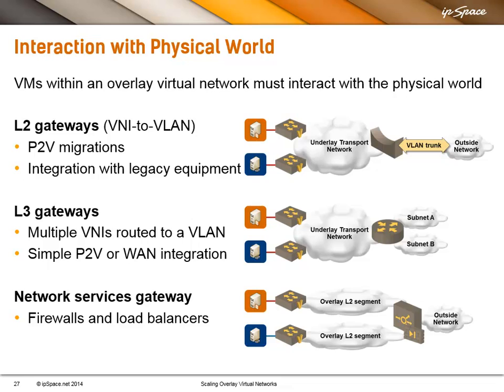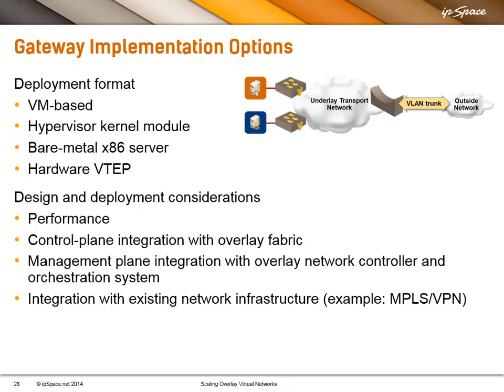Quite often you also have to implement some sort of network services with firewalls, load balancers, or similar. There are numerous implementation options when considering gateways. You can use a VM-based gateway, a gateway implemented alongside other hypervisor activities in the hypervisor kernel module, a dedicated x86 server running code on bare metal doing gateway functionality, or finally a hardware VTAP where overlay virtual network encapsulation and decapsulation is done in ASICs at terabit speeds. Which one would you choose?